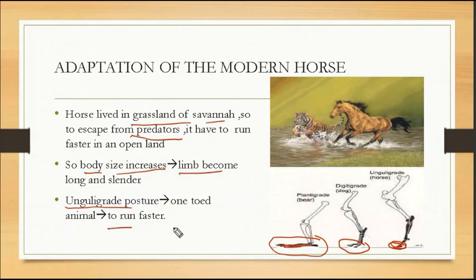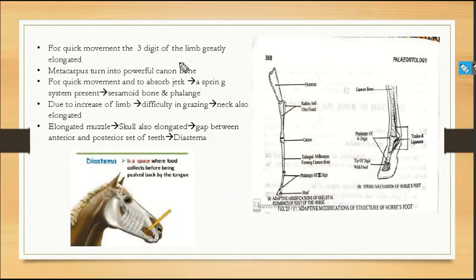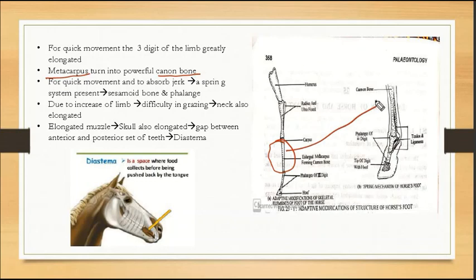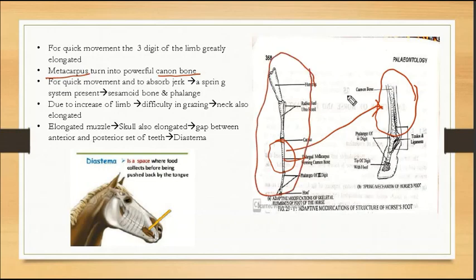This is the posture of the horse. In this small posture, we are going to look at the unguligrade posture. For quick movement, the three digits of the limb greatly elongated. In this way, the limb elongates. The metacarpus turns into a powerful cannon bone. As you can see, there is a cow, a giraffe, and a horse — the metacarpus turns into a cannon bone.